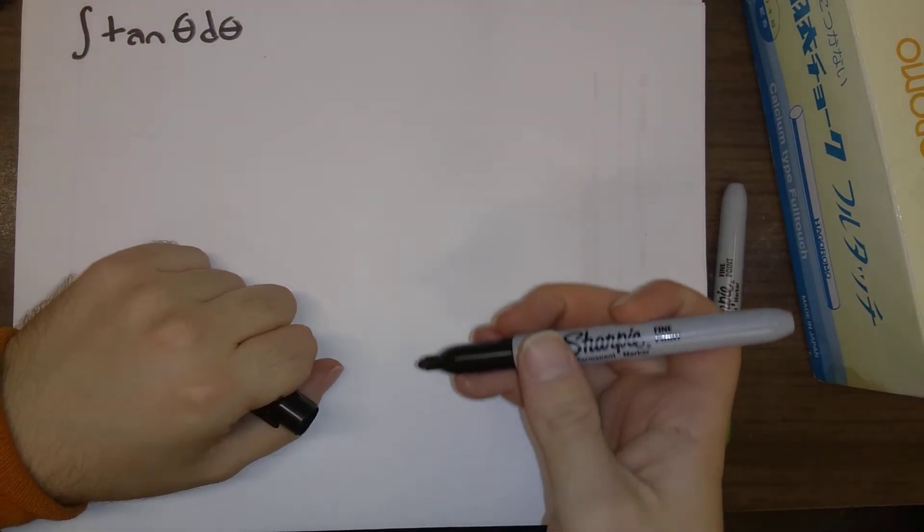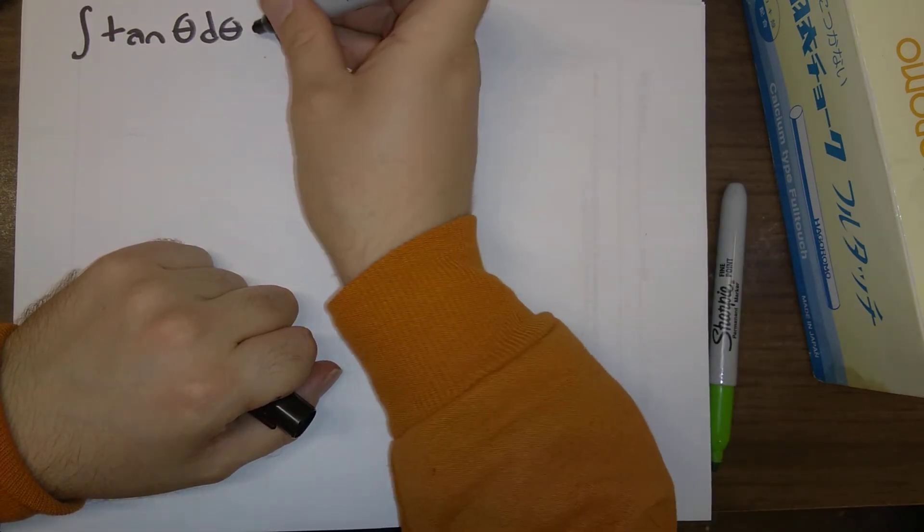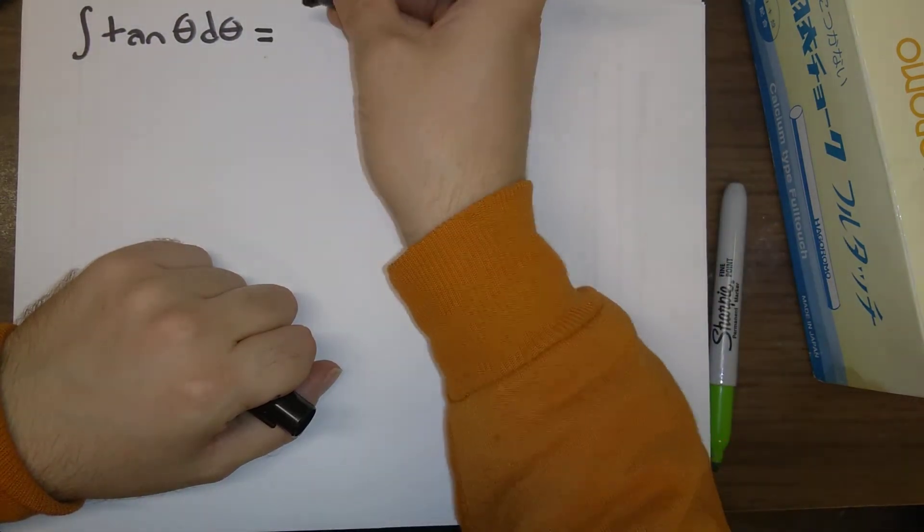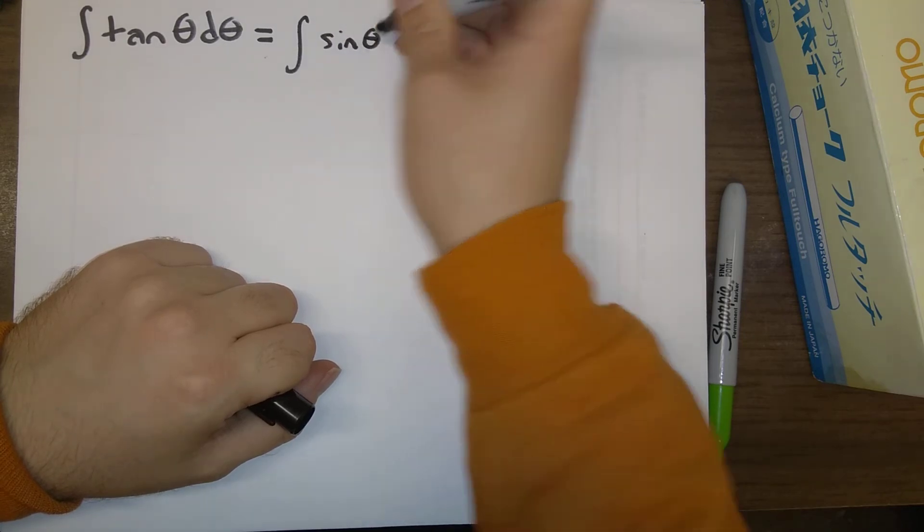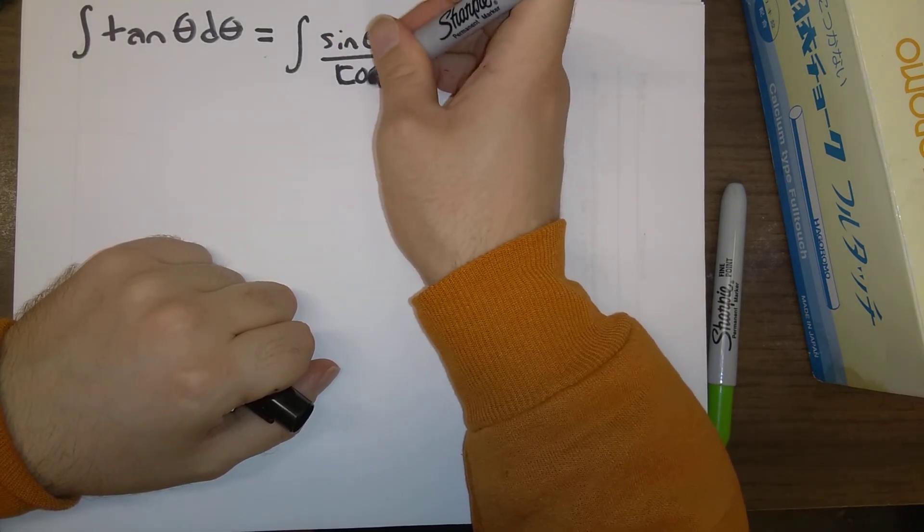So we'd like to use substitution. If we just leave it this way, it's probably not apparent how we're going to substitute, but think about how we might rewrite this. So our method for rewriting this is, well, tangent theta is sine theta divided by cosine theta.